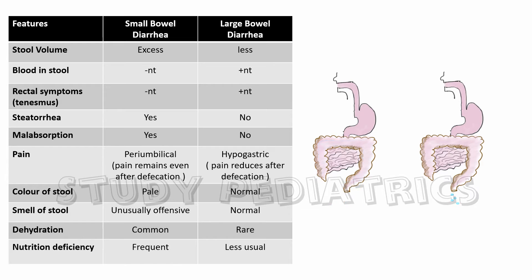Blood in the stool can be seen in large bowel diarrhea, since it is in close proximity to the exit. Similarly, the rectum being part of the large bowel, symptoms of rectal origin like tenesmus — which is the painful, incomplete feeling of defecation — are seen. Since major nutrients including fats are absorbed by the small bowel, steatorrhea and malabsorption occur in small bowel diarrhea.